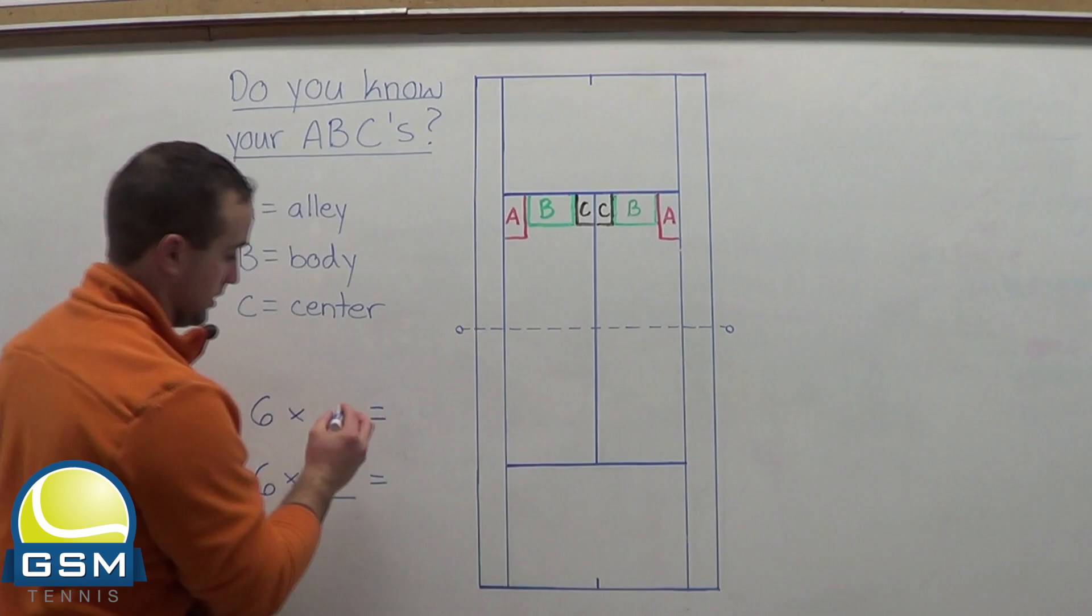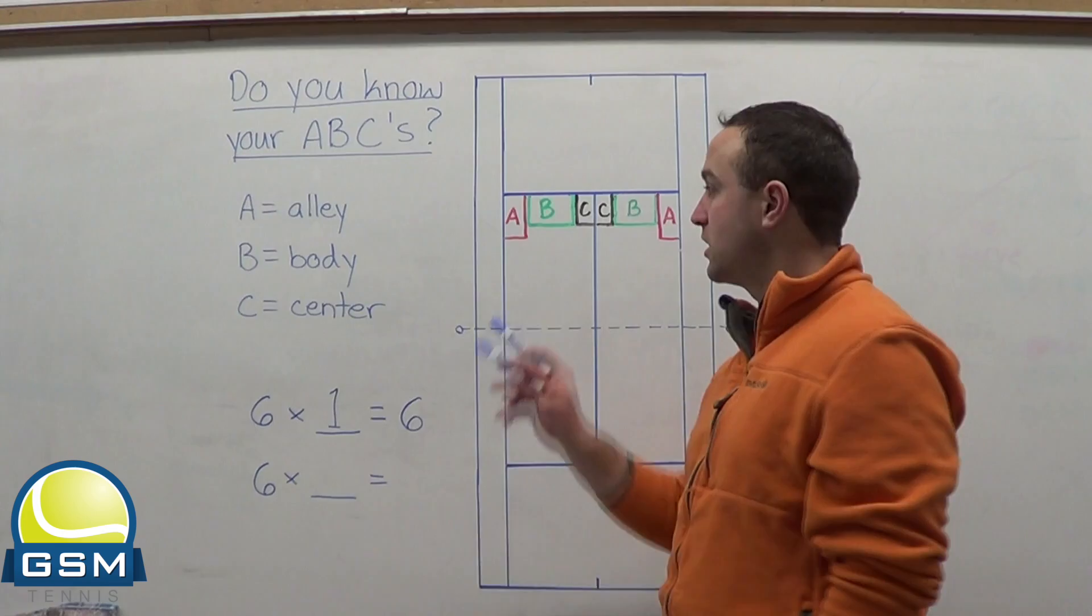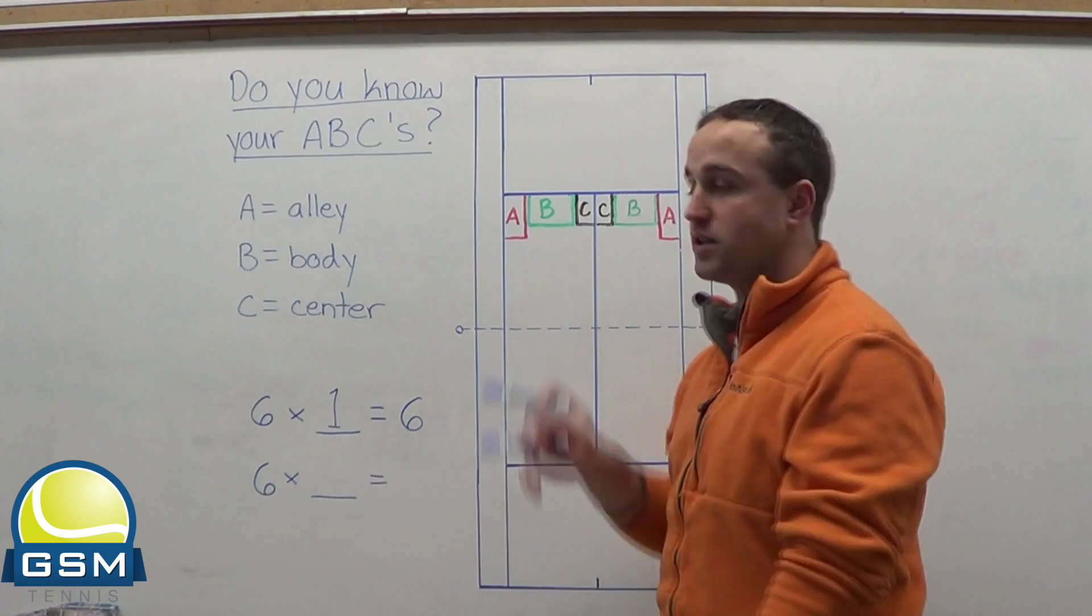Well, if you only have one type of serve, six times one gives you six different types of serves that you can hit. I mean, think about it. If you're playing an opponent and you hit the alley, and then the next time you're up here, you hit down the center, and then the next time you hit to the body. I mean, you're constantly changing it up.